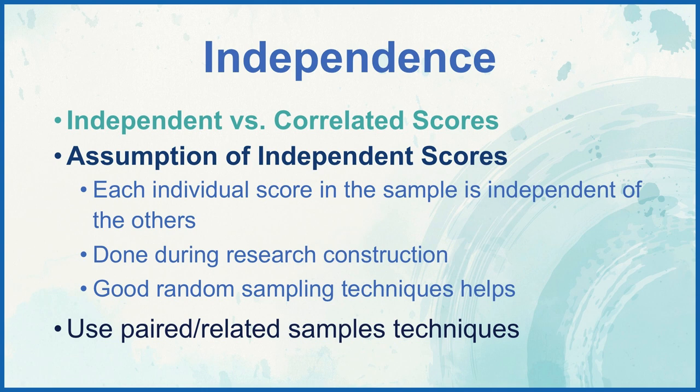The second assumption is independence — we want to make sure we have independent rather than correlated scores. Each score in our data set should be independent of the others. You shouldn't sample one person and then that person's brother, or get people from the same family, or call all of your Facebook friends where there may be a relationship in the way they answer items. We can address this during research construction by using good random sampling techniques to increase the likelihood of independent scores. If we do not have independent scores, we can use a paired or related samples technique, such as a paired t-test instead of an independent samples t-test.